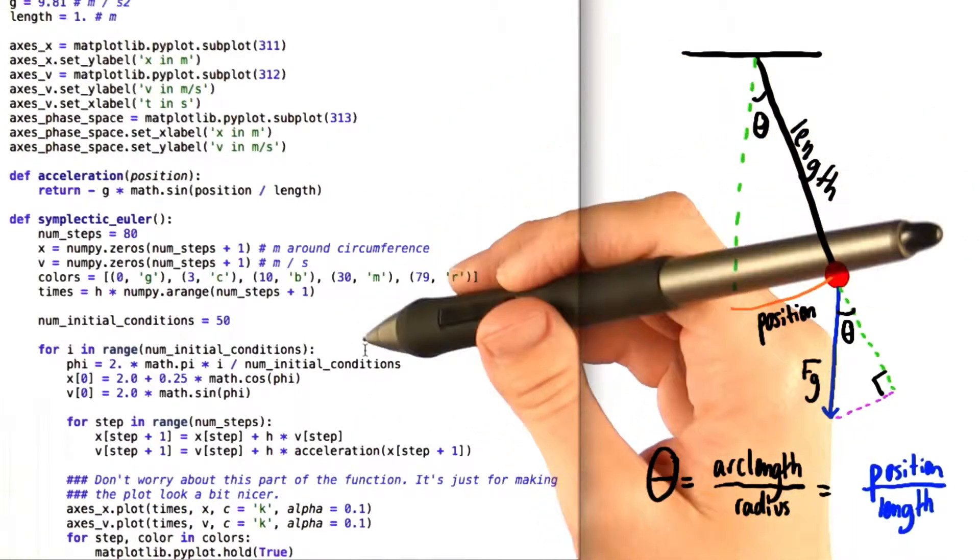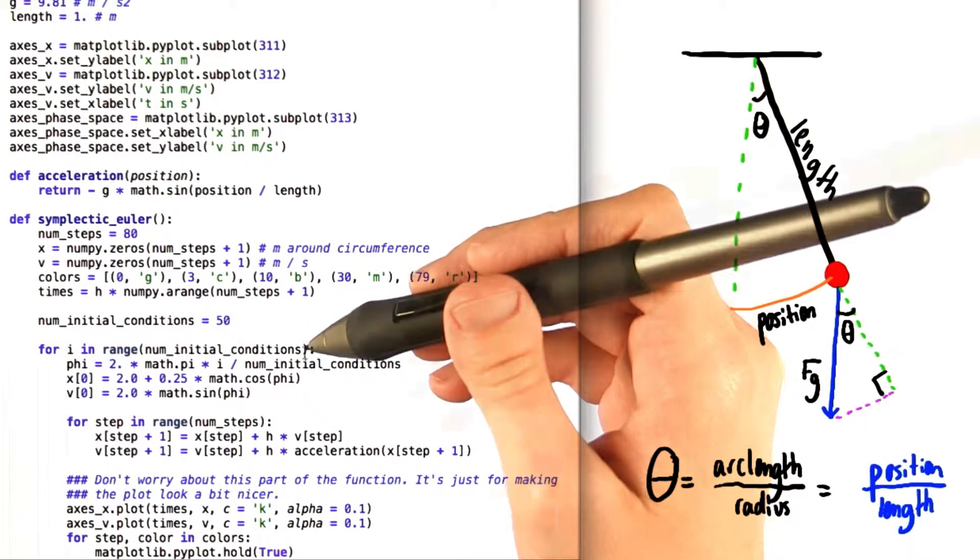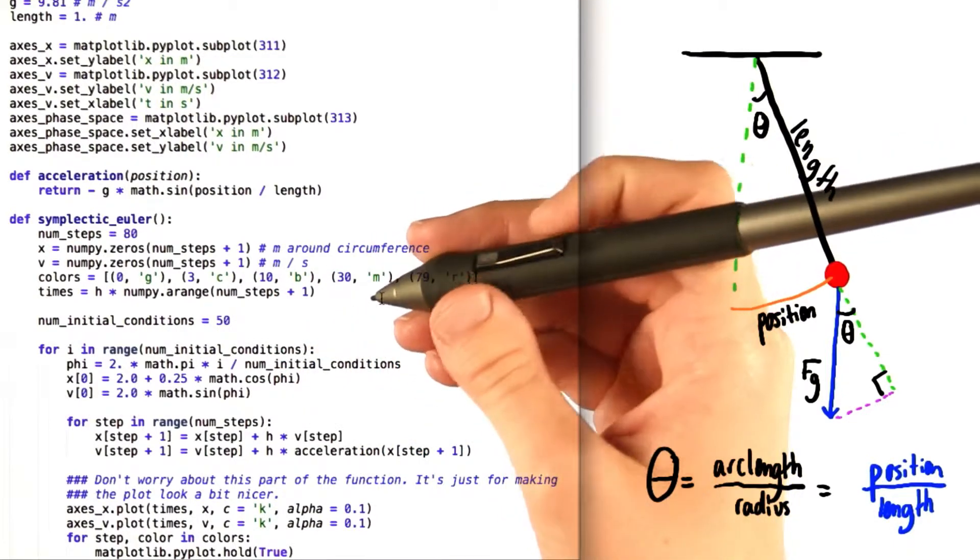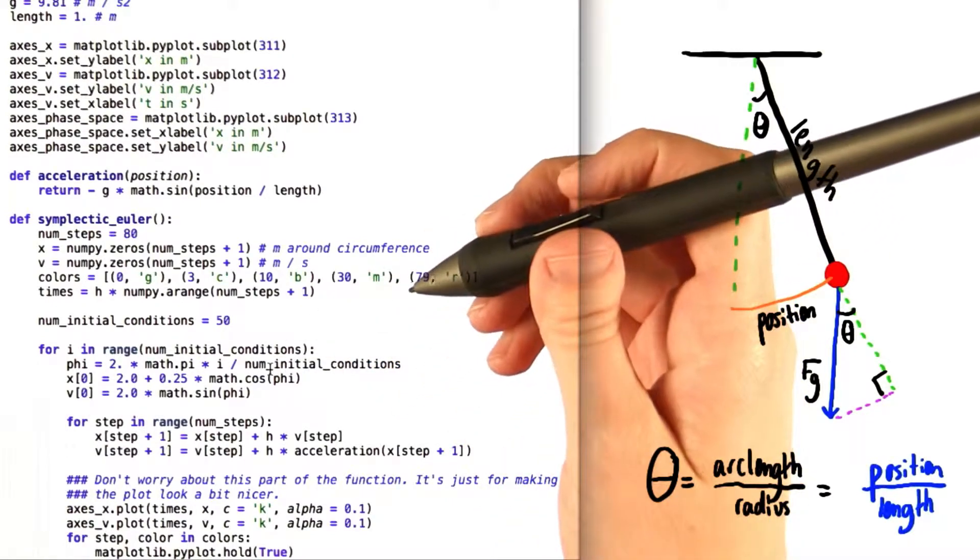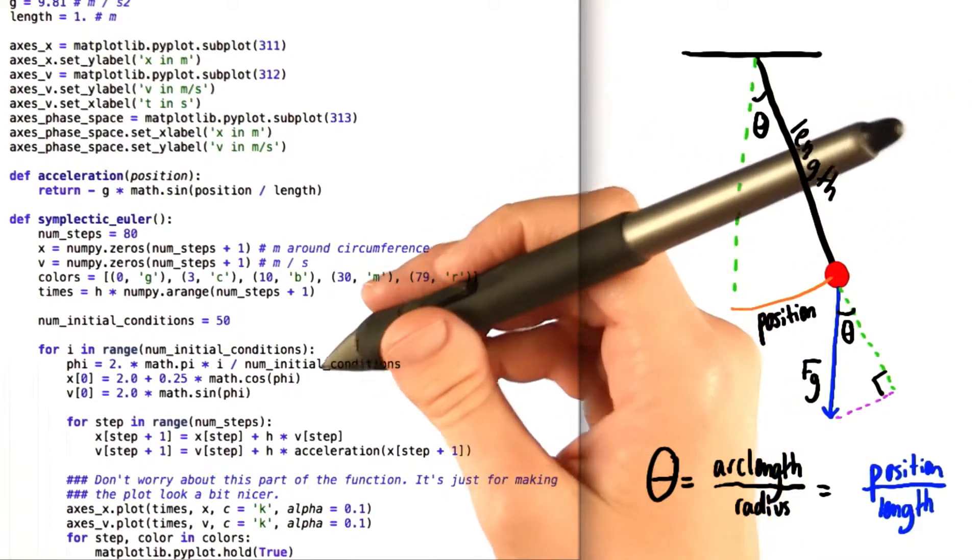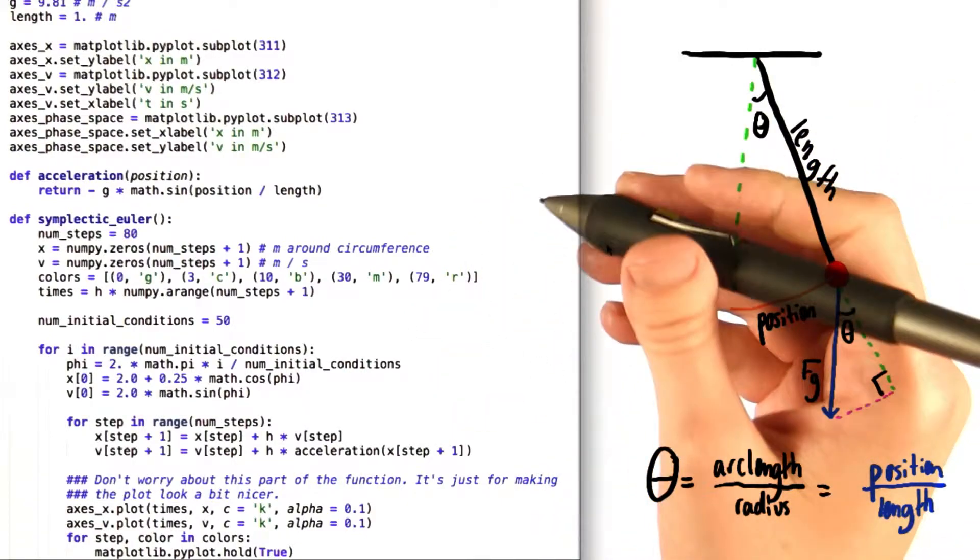Okay, moving on to our symplectic Euler function. You had to fill in this for loop with the input num initial conditions. As I said in the intro video for the problem, we wanted the initial x to vary from 1.75 to 2.25 and the initial v to vary from negative 2 to 2 corresponding to the coordinates of every point along that green circle that I showed you.